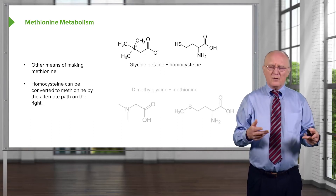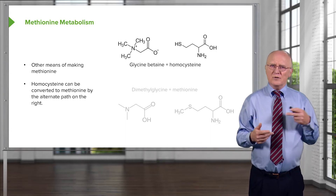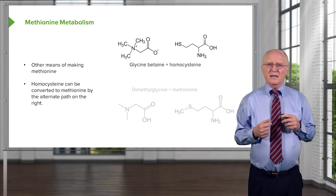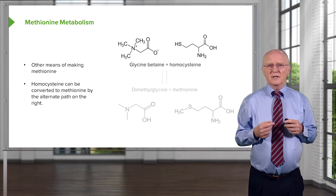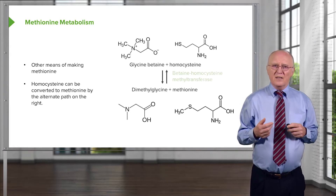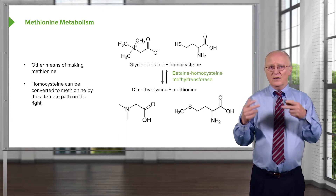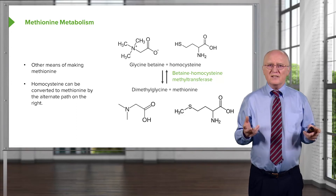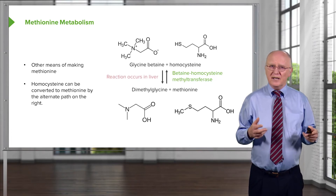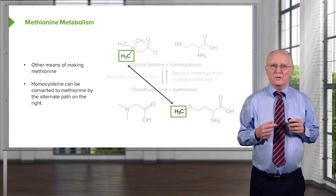This pathway is another way of getting a methyl group onto homocysteine. The difference between homocysteine and methionine is that methyl group. Glycine betaine is the source of the methyl group here. It combines with homocysteine to make dimethylcysteine and methionine. A methyl group has transferred from the glycine betaine onto the homocysteine to make methionine. The enzyme catalyzing this reaction is betaine-homocysteine methyltransferase, and the reaction occurs in the liver.